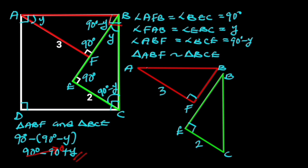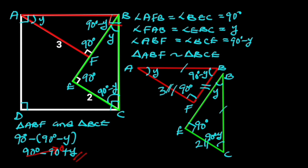For clarity, let's represent each triangle separately. From both triangles, we can observe that corresponding sides are proportional. We can say that AF over EB is equal to EC over FB, and EC over FB is equal to AB over BC.